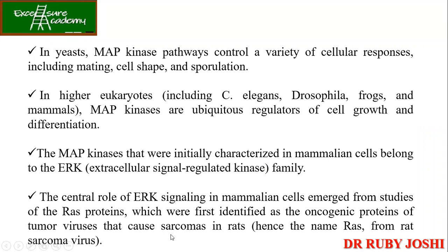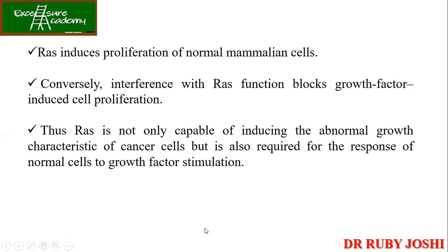RAS is an oncogenic protein of tumor viruses — it caused sarcomas in rats and hence was named RAS. It induces proliferation of normal mammalian cells, but mutation may interfere and block growth factor-induced cell proliferation. It is not only capable of inducing the abnormal growth characteristics of cancers, but is also required for the response of normal cells to growth factor stimulation. That is why you cannot target RAS for chemotherapy, because targeting RAS would also affect normal cell growth.